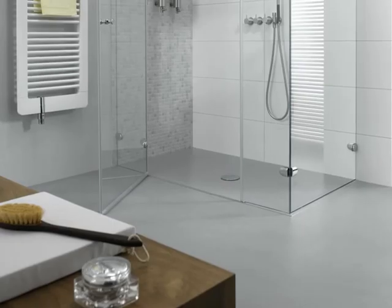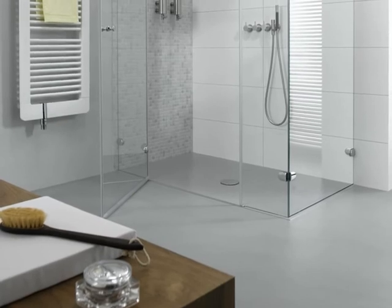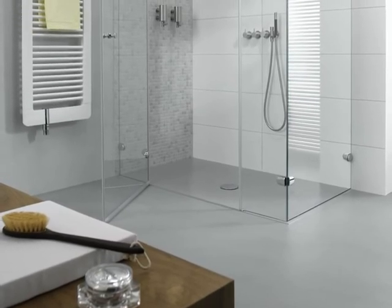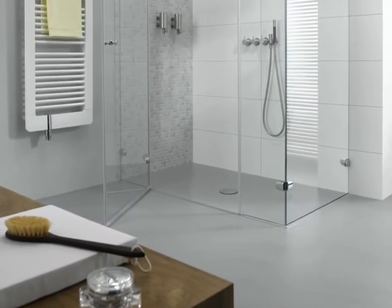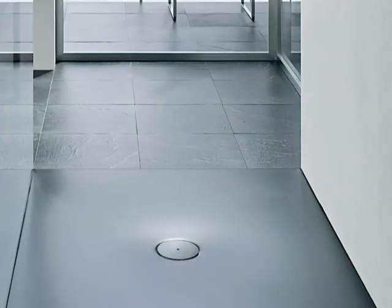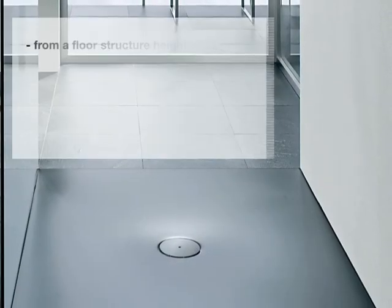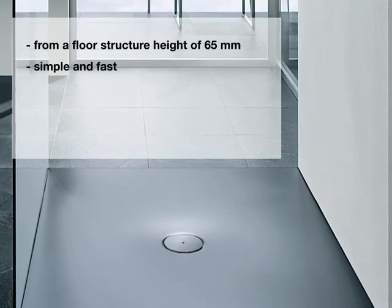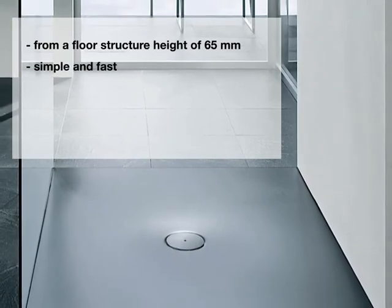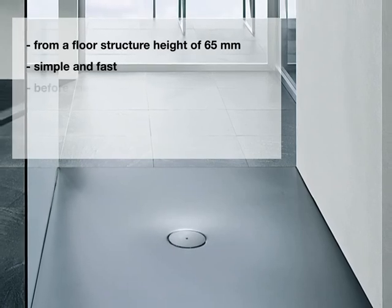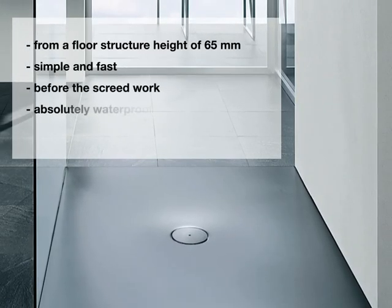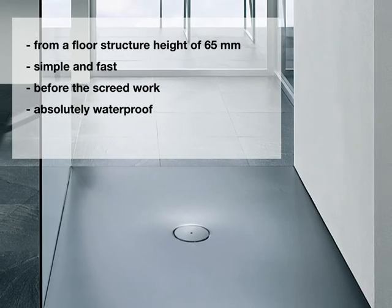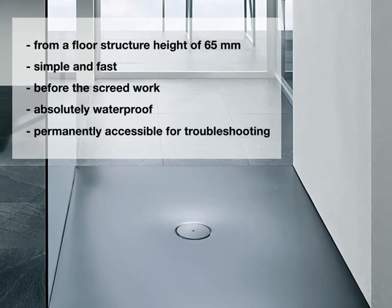Here once again, an overview of the advantages of the Better Installation System Flush to Floor for the Better Floor and all 3.5mm deep Better Shower Trays: Installation from a floor structure height of 65mm, positioned and installed quickly and easily, assembly of the installation system prior to the screed work, no penetration of moisture, no water damage, and permanently accessible for troubleshooting.